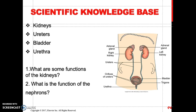The urinary system is composed of the kidneys, ureters, bladder, and urethra. The kidney is located behind the peritoneal cavity, and the left kidney is slightly higher than the right kidney due to the anatomical structure of the liver. The main function of the kidney is to filter waste product — it's a filtration system. It also maintains blood pressure through the RAS — the renin-angiotensin-aldosterone system.